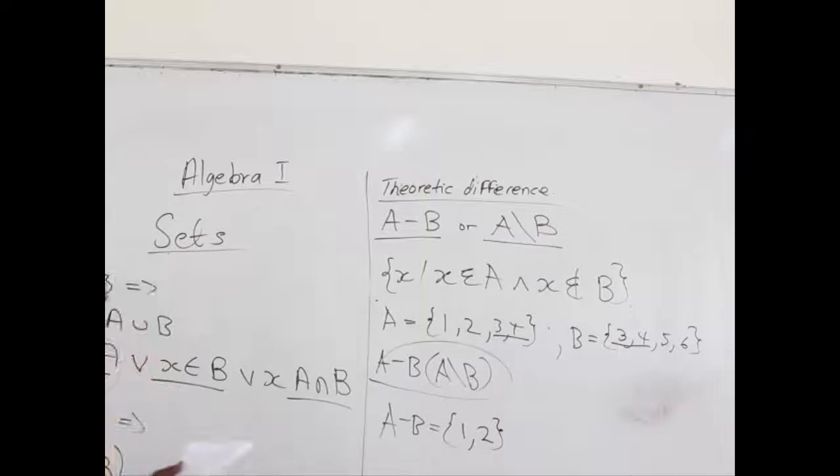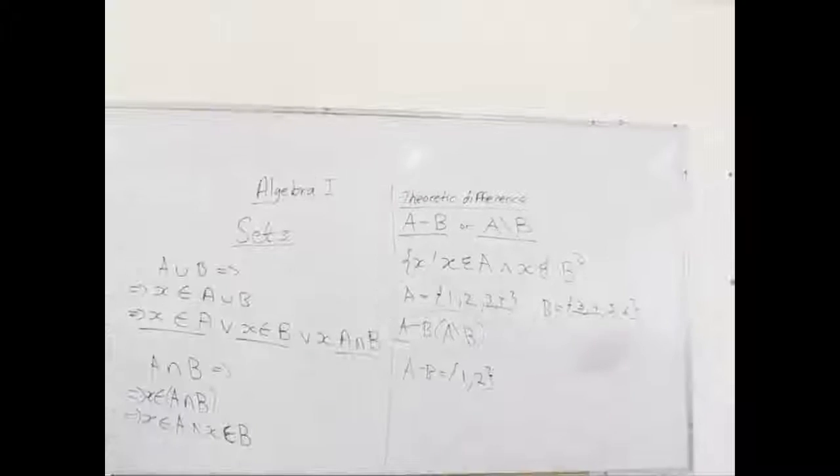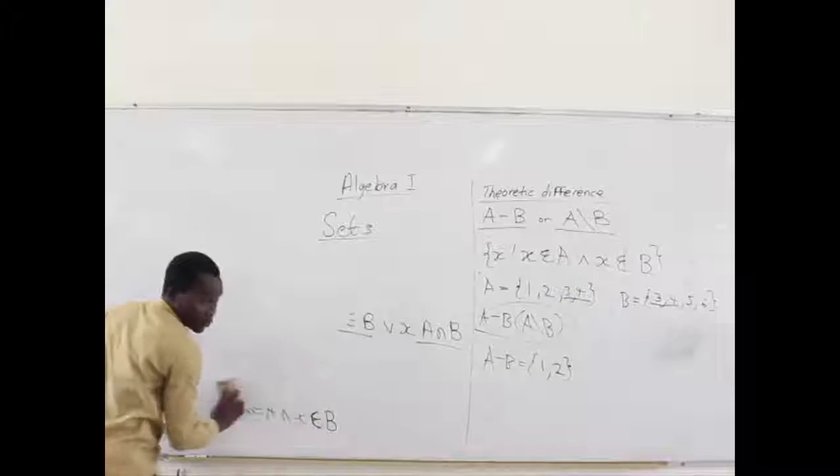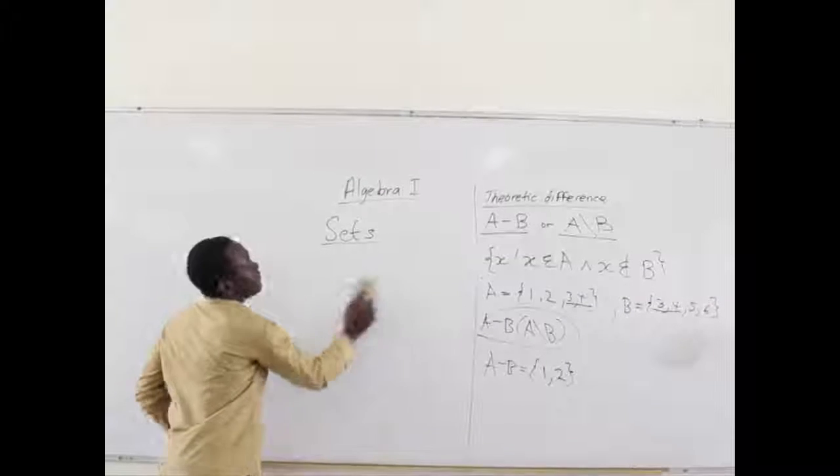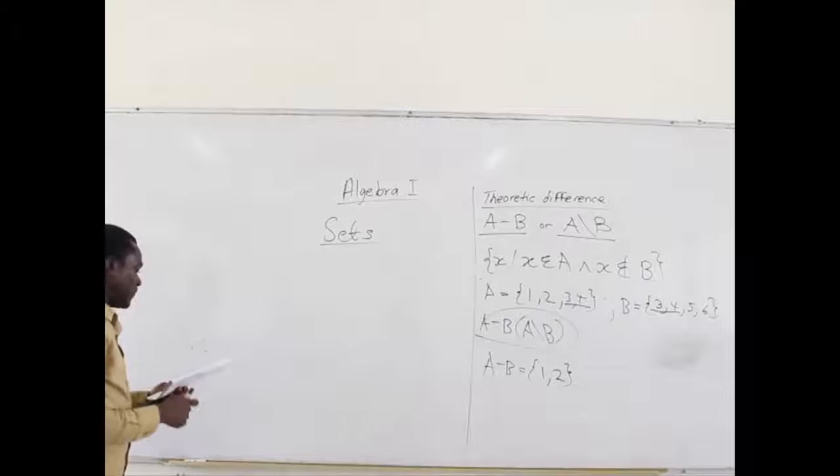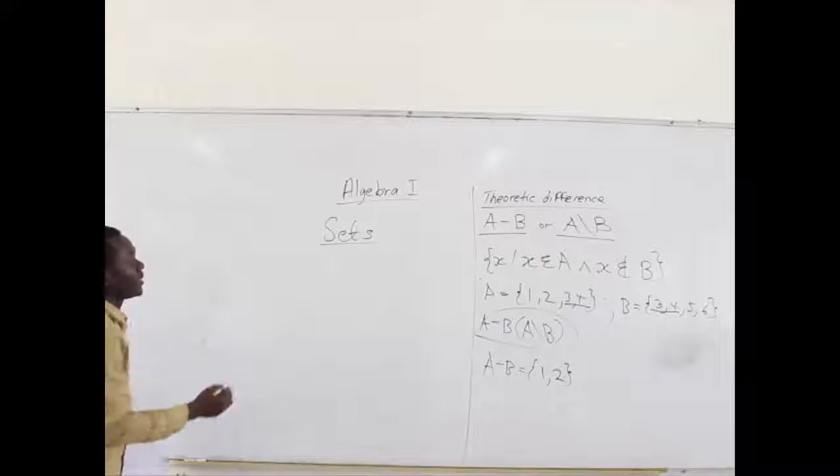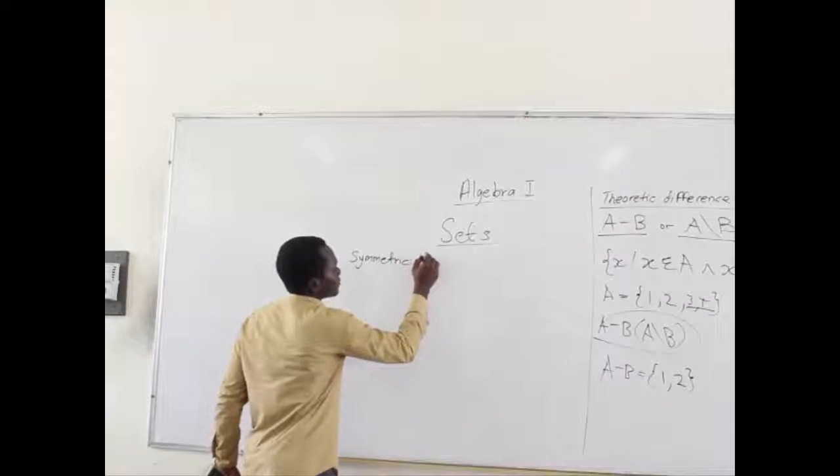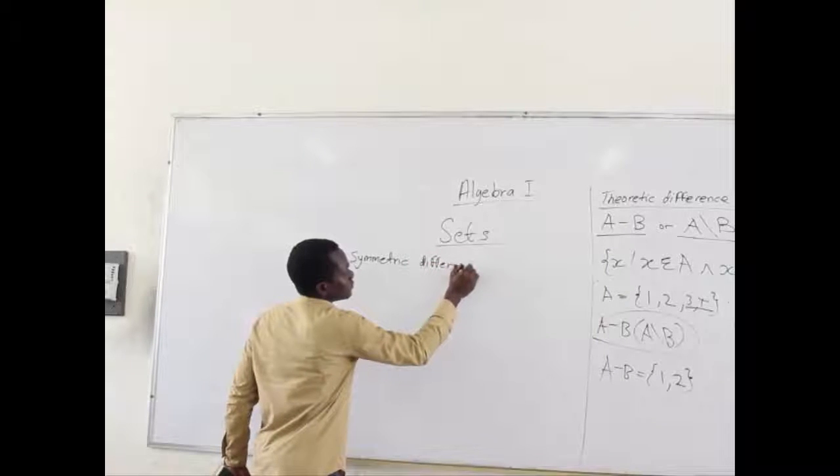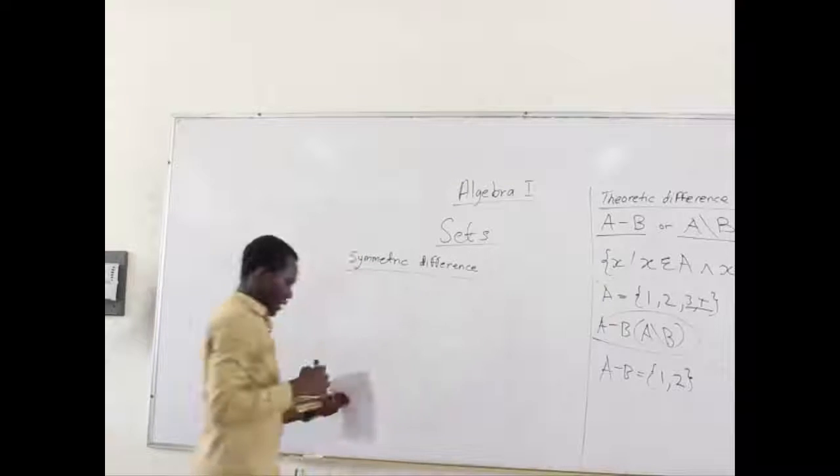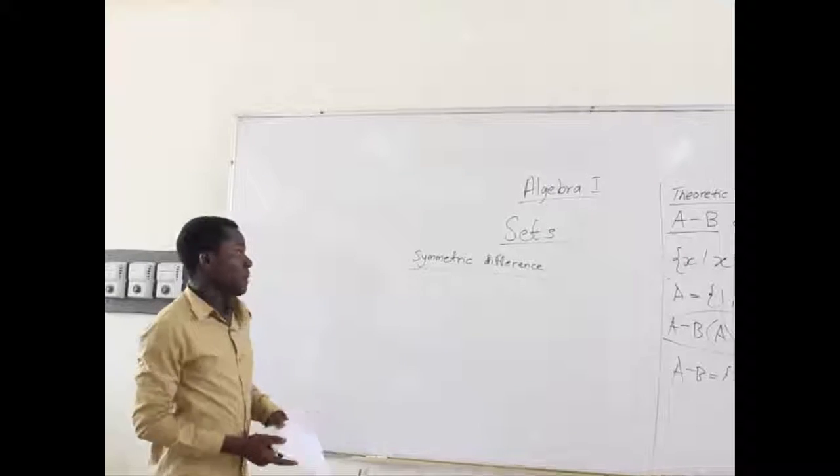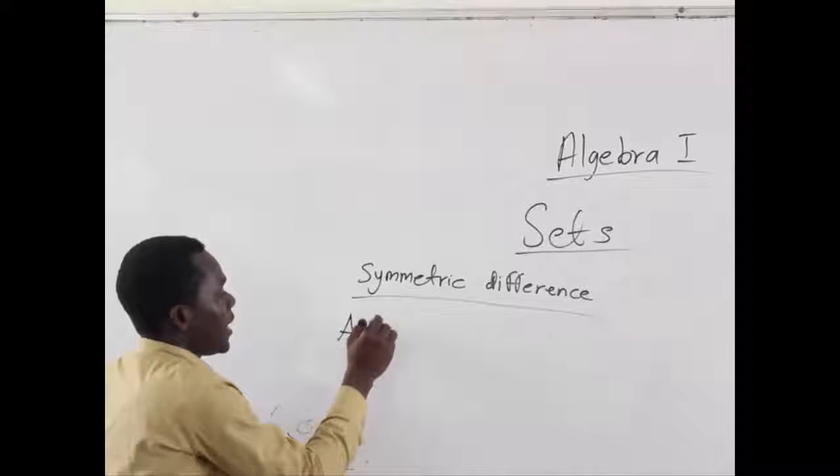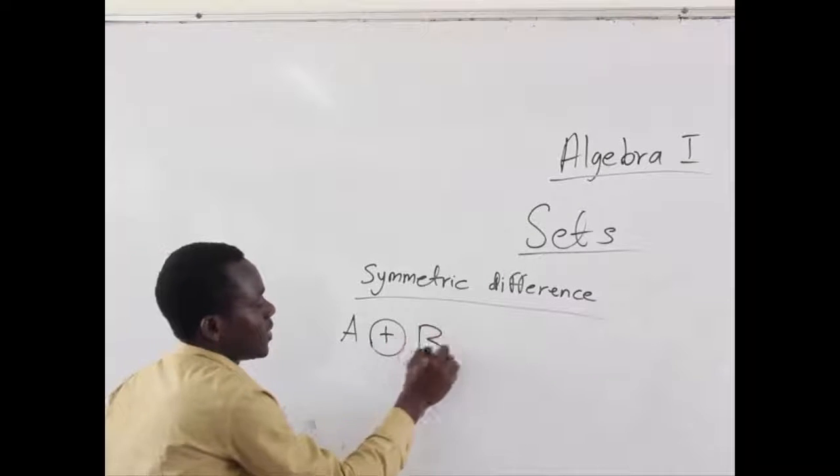So, that's all about Theoretic Difference. Now, last but not least, we are going to talk about the Symmetric Difference which is also new but we will learn it for our own benefit. The Symmetric Difference of two sets, let's say A and B, can be denoted as A with a circle plus and B.